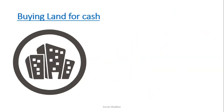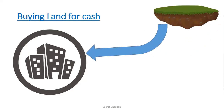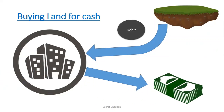The second transaction is buying land for cash. The land is entering the company, and land is an asset account, so since it's entering the company, it's debit. In return, the company will pay cash, which means cash is going out of the company, so cash is credit. From these two examples, we can see that asset accounts increase with debit and decrease with credit. This is why we say the normal balance of an asset is debit.